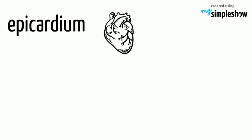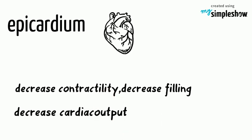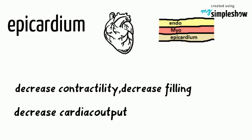ST segment elevation occurs due to changes in the epicardium. This exerts pressure on our heart, resulting in decreased contractility, decreased filling, and decreased cardiac output. Our heart consists of three layers: epicardium, myocardium, and endocardium. The epicardium is the layer very close to the pericardium, so changes which occur in the epicardium during pericarditis will also affect the pericardium.